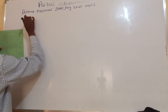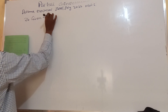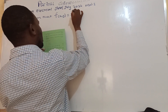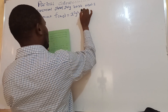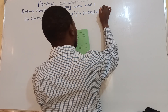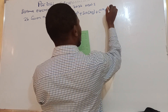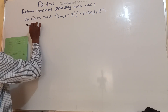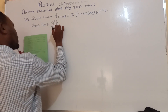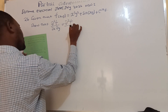We are tackling question 2b. I think the other questions in this paper you have done them already. Question 2b: given that function f(x,y) is equal to x cubed y squared plus sin(xy) plus exponential xy, show that the second order partial derivative first with respect to y and then with respect to x is equal to the second order derivative first with respect to x and then with respect to y.